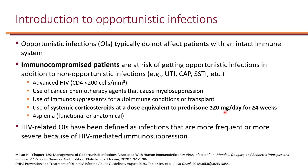And asplenia. The spleen has the function of filtering the blood — specifically, any encapsulated bacteria will be removed by the spleen, including pneumococcal species as well as Haemophilus influenzae. Asplenia could be either functional, for example patients with sickle cell disease who have a non-functioning spleen, or anatomical, meaning it was surgically removed — a splenectomy.